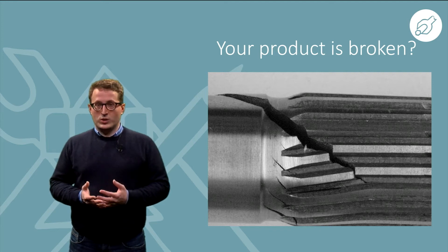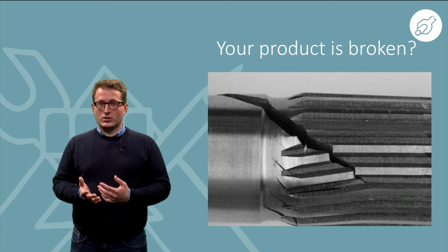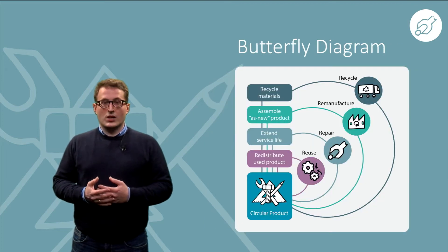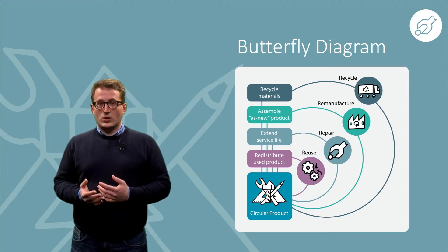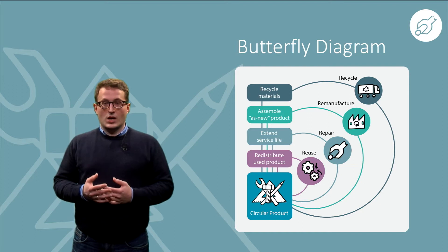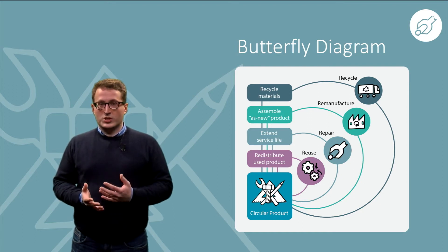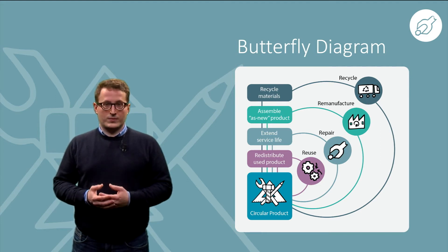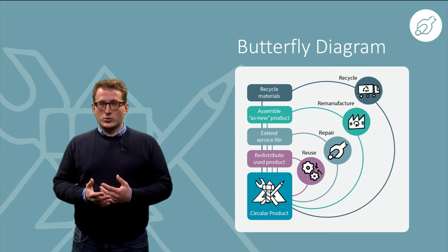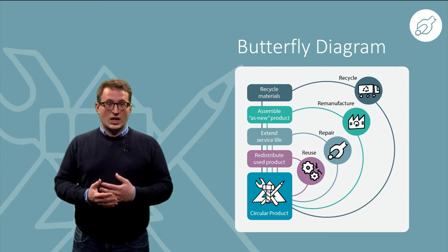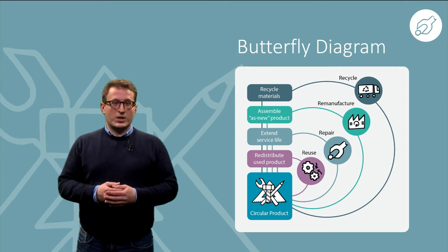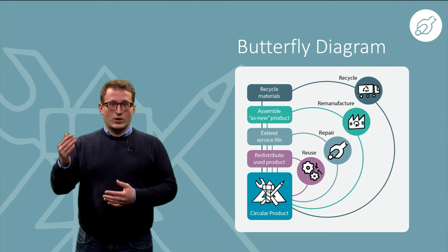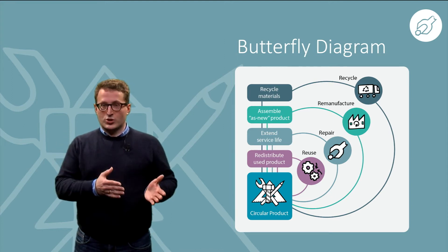As we have seen in the introduction week, repair is the second loop in the circular economy diagram. The purpose of repair is to extend the service life of a product by replacing or fixing its broken parts, restoring it to or even beyond its original design condition. Since repair involves the use of new resources, such as materials and energy, it may be less desirable than simply reusing. But it still maintains a higher level of the original product's value than remanufacturing or recycling.